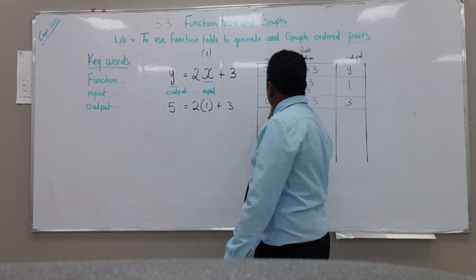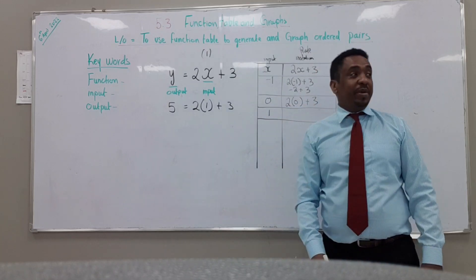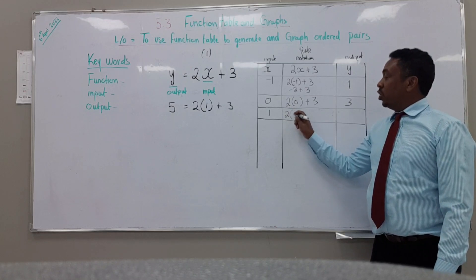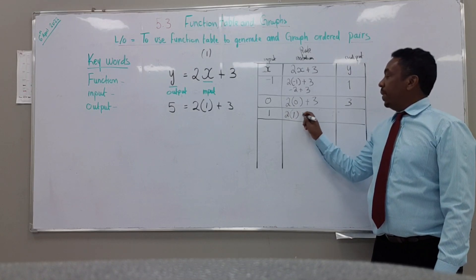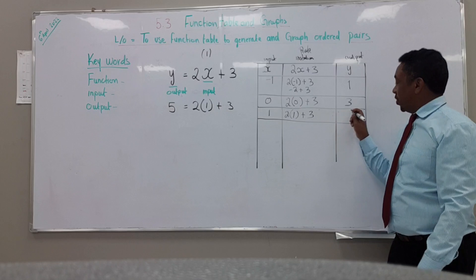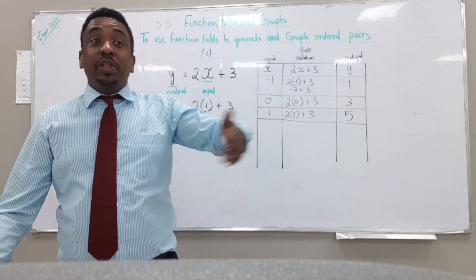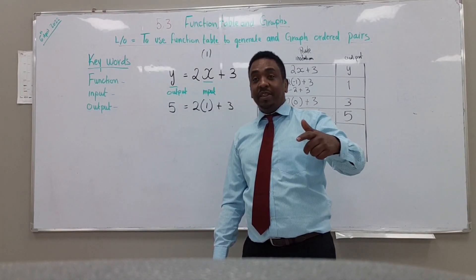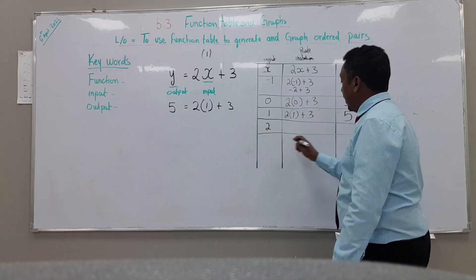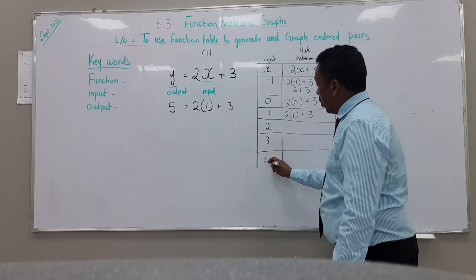Now let's do another one. If I put 1 here, can you work out what the outcome is? The answer is 5. Let's work it out: 2 times 1 is 2, plus 3 is 5. The answer is 5. Mashallah, well done. Now I will put 2 here, 3 here, and 4 here. Let's leave it up to 4.